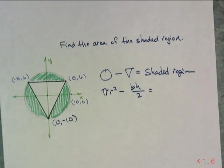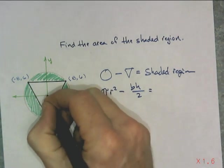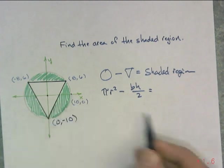So for πr², we need to know what the radius is. If we look at, so the radius, if that's (10,0), well yes, the radius must be 10.